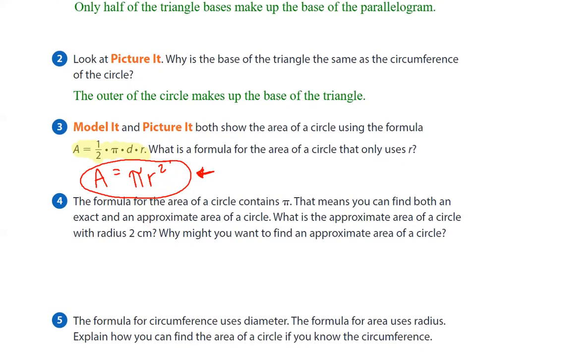The formula for the area of the circle contains pi. That means you can find both an exact and approximate area of a circle because you can't use the whole pi. Remember we had to round it to 3.14. What is the approximate area of a circle with a radius of two centimeters? So area equals pi times the radius squared. We need to do the exponent first. So area equals pi and 2 squared is 4. So 3.14 times 4. So area equals 12.56 centimeters squared.